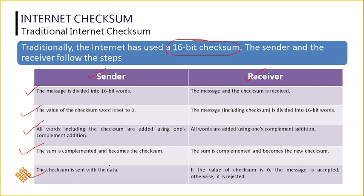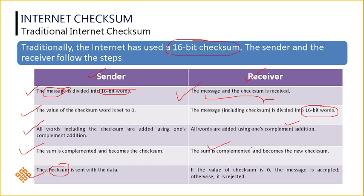The checksum is sent with the data. These are the various steps we follow at the sender side. At the receiver side, the message and the checksum — whatever checksum we have calculated and the message divided into 16-bit words — both are sent to the receiver side. The message including the checksum is divided into 16-bit words, same as what we did on the sender side. Then all words including the checksum are added with one's complement addition. Whatever sum we got is complemented and it becomes the new checksum. If the value of the new checksum is all zeros, then there is no error and the message is accepted. If you get any other number, we are going to reject it, thinking that some error has occurred.